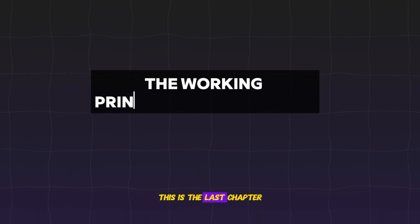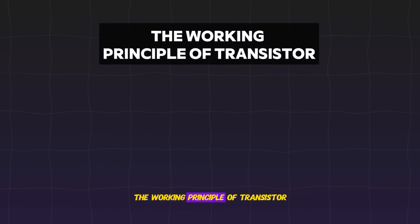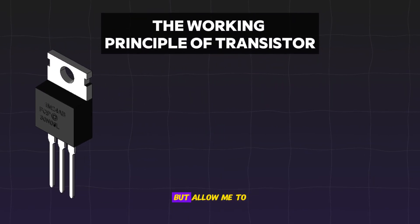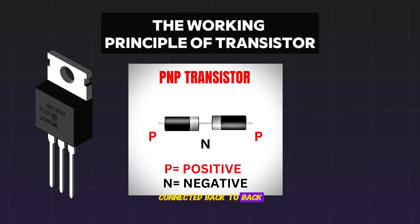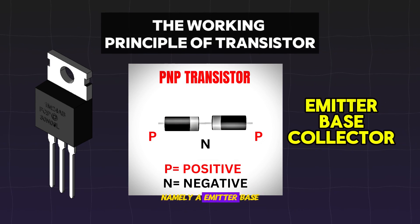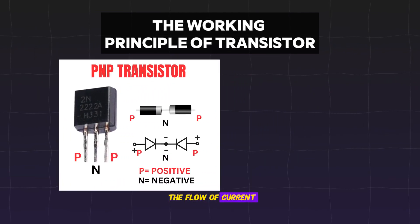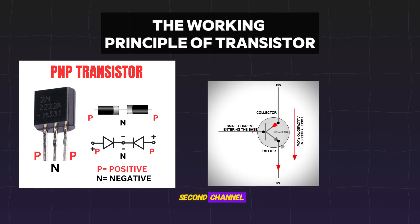Welcome back. This is the last chapter where I am going to explain the working principle of transistors. A transistor consists of two PN diodes connected back to back. It has three terminals: emitter, base, and collector. The basic idea behind a transistor is that it lets you control the flow of current through one channel by varying the intensity of a much smaller current flowing through a second channel.